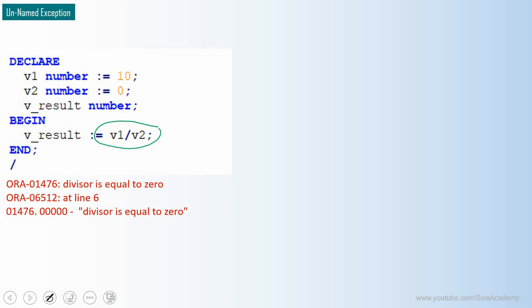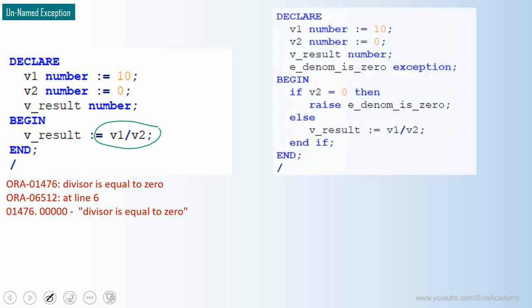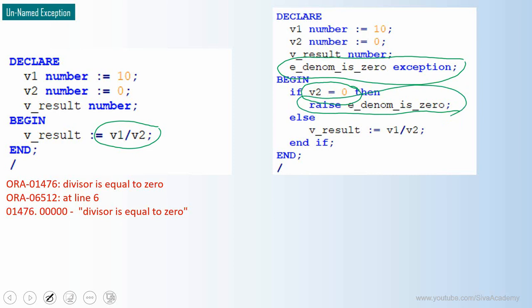Instead of allowing Oracle to raise this exception, we can proactively check whether the denominator is equal to zero or not. Only if it is not equal to zero we allow the division to happen; otherwise we can explicitly raise an exception. This is an example of a user-defined exception using the RAISE keyword. Here I'm defining a variable of exception type, then checking if v2 is zero — if the denominator is going to be zero — and then explicitly raising that exception rather than letting Oracle raise it.